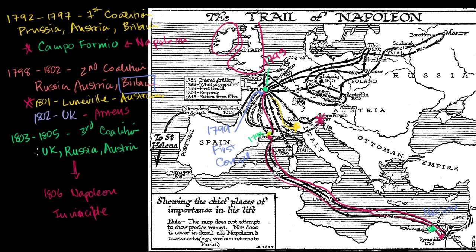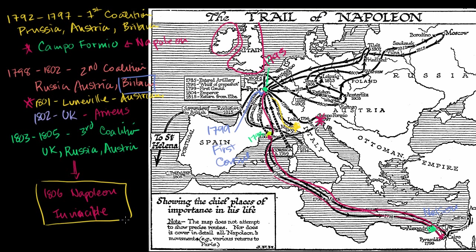It was a very, very short-lived peace, because in 1803 with Napoleon still in power, the Third Coalition formed. In the next video, we'll see exactly how Napoleon was able to once again be victorious over these powers to become, essentially in his mind, invincible.